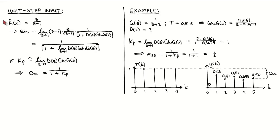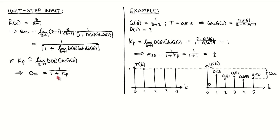The first reference input we consider is the unit step, whose Z transform we can write from Z transform tables as Z divided by Z minus 1. Using our result from the previous page, we can write the steady-state error signal as shown. The Z minus 1 terms cancel out, and after applying the limit to the numerator and denominator, we get 1 divided by 1 plus the limit as Z tends to 1 of the loop transfer function. We now define the position error constant Kp as the limit as Z tends to 1 of the loop transfer function, which allows us to write the steady-state error as 1 divided by 1 plus Kp.